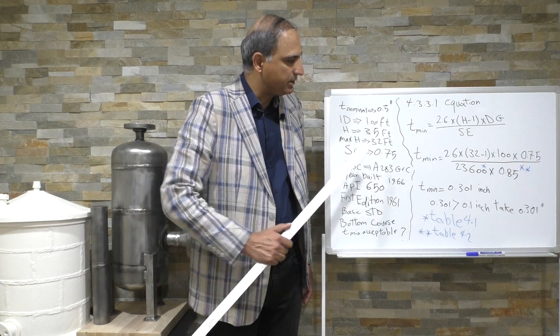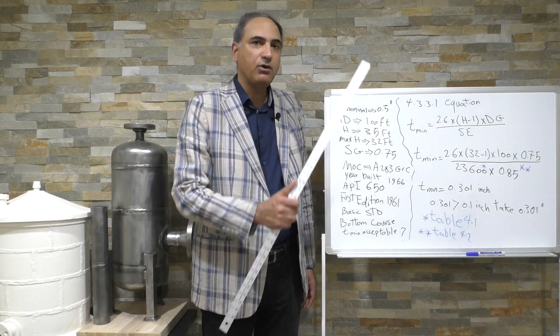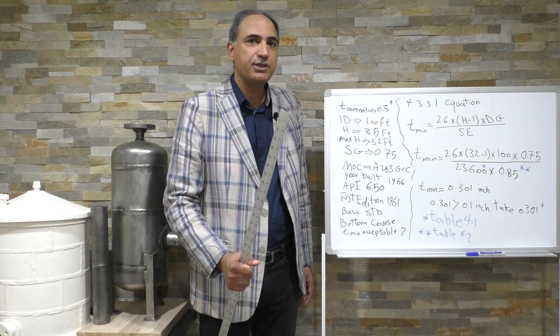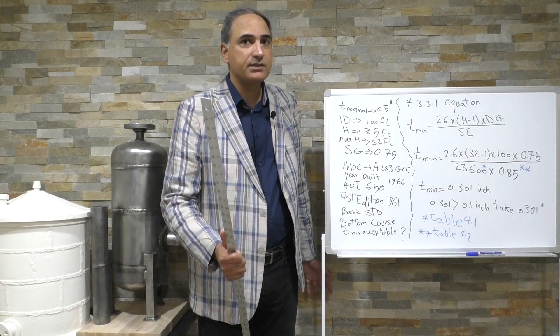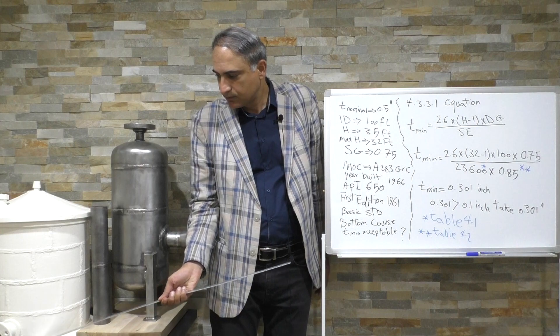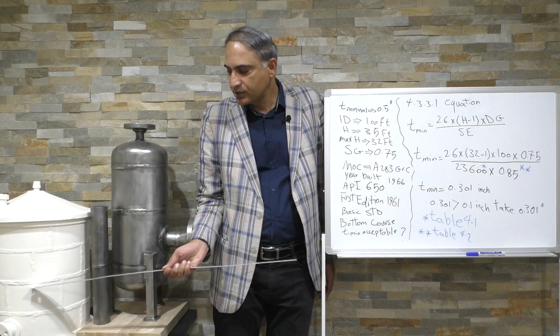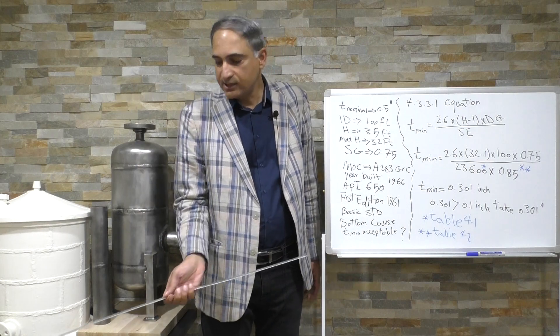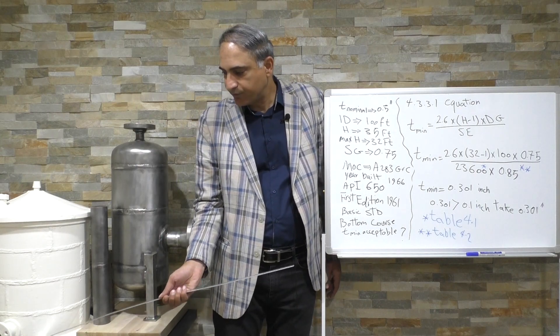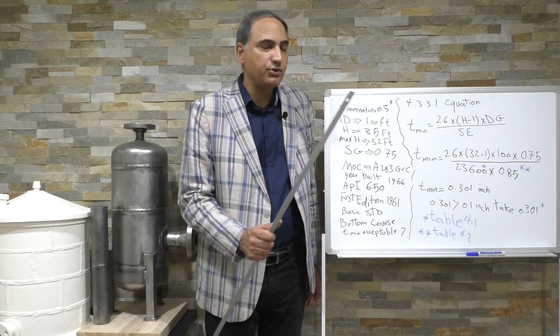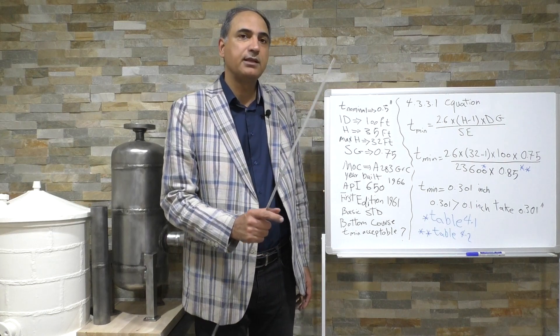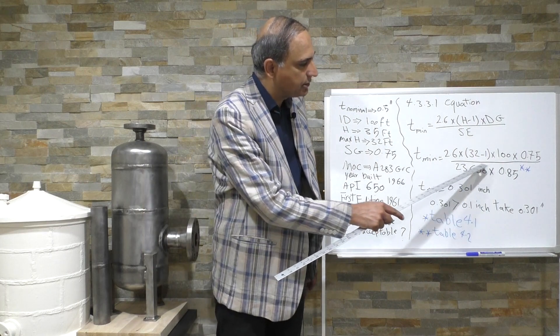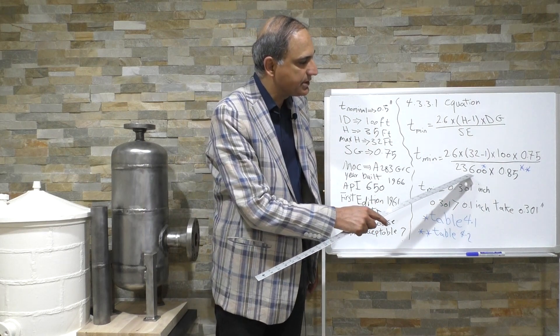So if you go to table 4.1 you're going to see a table with all the materials listed and it's going to say what maximum allowable stress you have to use for first course. First course and second course is one value, and for the upper courses there's another value. Since we are going to calculate for the first course, we're going to use the table, the one indicated as first course and second course, and that was 23,600.